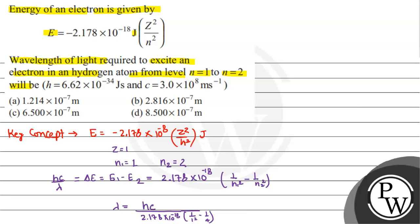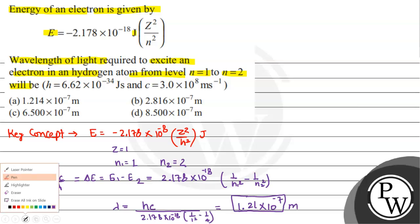When you substitute the value of hc and solve, this equals 1.21 × 10^-7 meters. This will be your answer. According to your question, option A will be your correct answer. I hope you understood. Thank you.